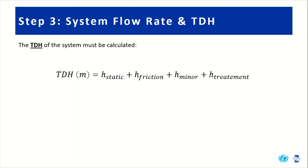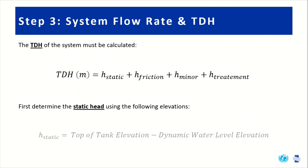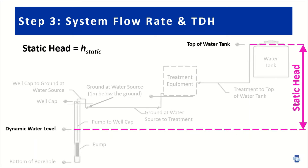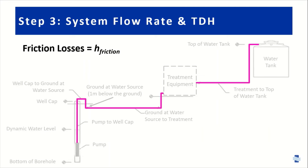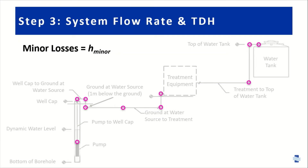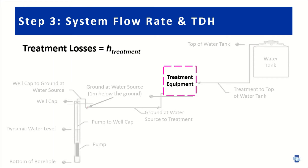The TDH of the system is calculated using the following equation: static head plus friction losses plus minor losses plus treatment losses. First, we determine the static head using the top of tank elevation minus the dynamic water elevation — the vertical distance between the top of the water tank and the dynamic water level. Next, friction losses are caused by friction as water passes through the piping. Minor losses occur at bends, fittings, valves, or instruments such as pressure gauges. Lastly, treatment losses occur when water flows through the treatment system.